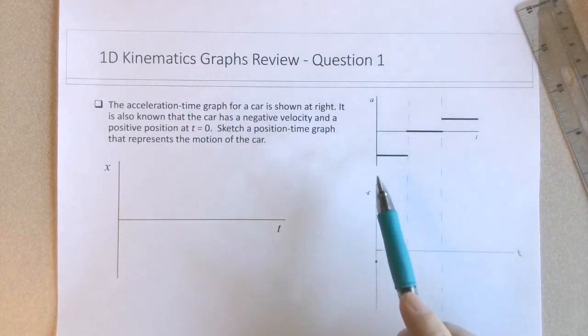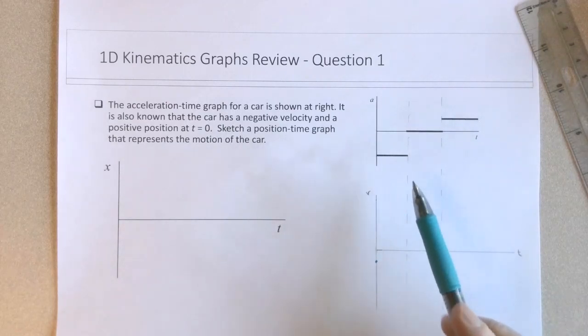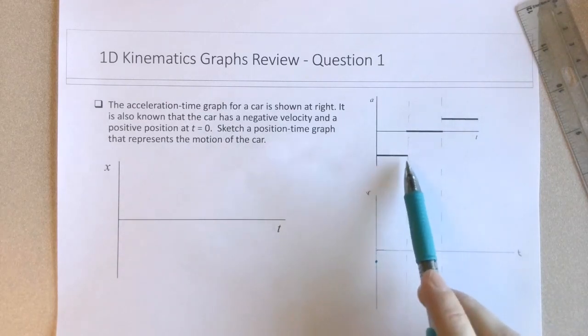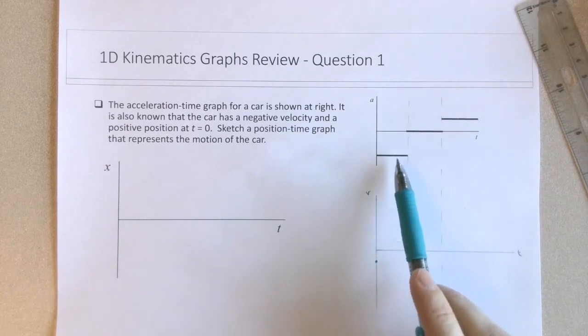And then we know it has negative acceleration. So the Vt graph must have a negative slope corresponding to this particular value of the acceleration.